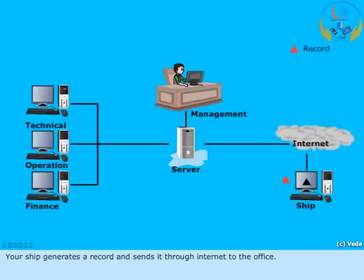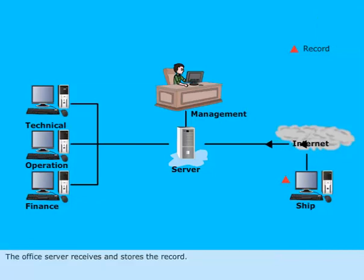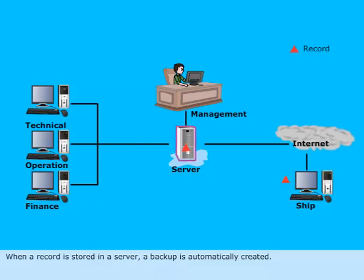Your ship generates a record and sends it through the internet to the office. The office server receives and stores the record. When a record is stored in a server, a backup is automatically created.